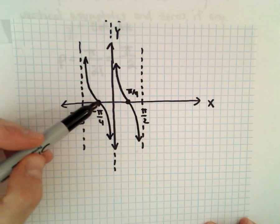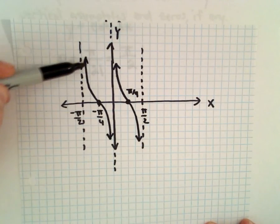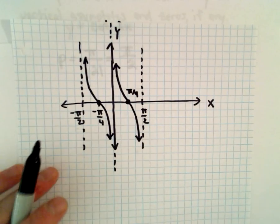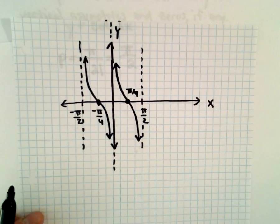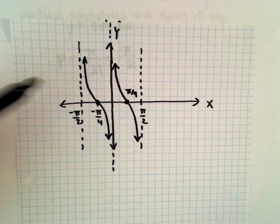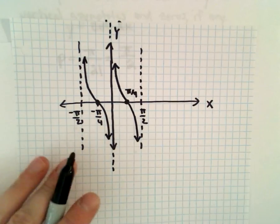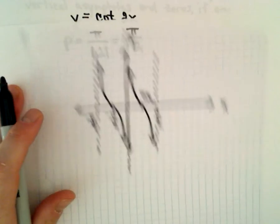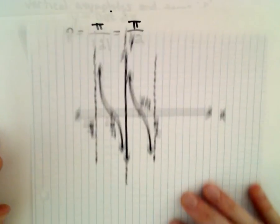I say increasing as we move to the left. The graph is definitely decreasing everywhere, just to hopefully clear up any confusion there. That's all there is to it. It's just the graph of cotangent. The only thing that has changed is the period.